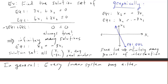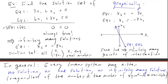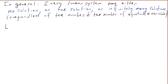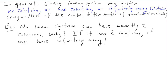In general, every linear system — no matter how many equations and unknowns — has either no solution, one solution, or infinitely many solutions. I state this without proof, but we'll see why this is true using matrix methods in another lecture. For example, no linear system can have exactly two solutions, because if it has two, it must have infinitely many.